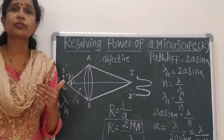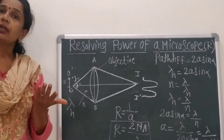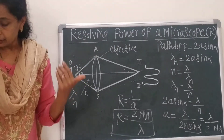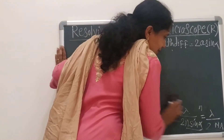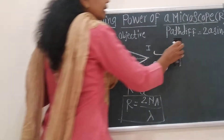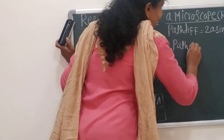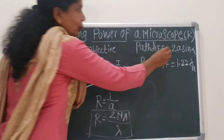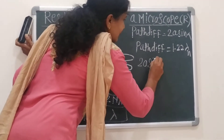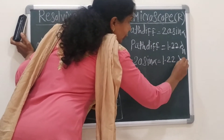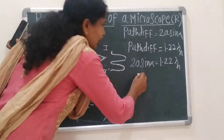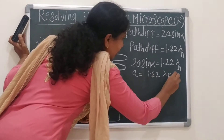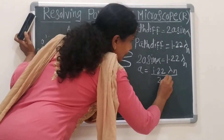If the two objects are self-luminous, the diffraction pattern again consists of a central bright disc surrounded by Airy rings. In that case, the path difference equals 1.22 lambda-N. Therefore, 2A sine(alpha) equals 1.22 lambda-N, giving A equals 1.22 lambda-N upon 2 sine(alpha).